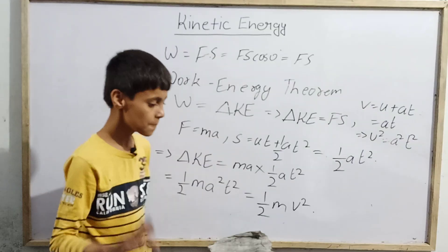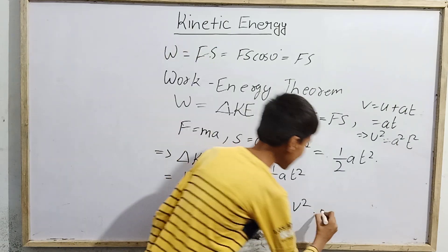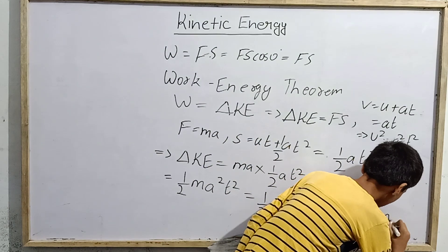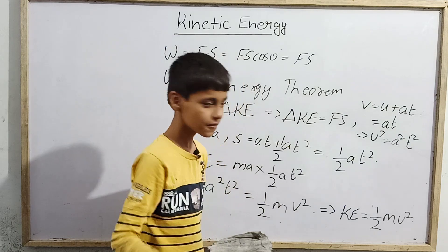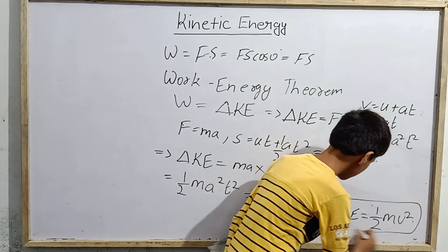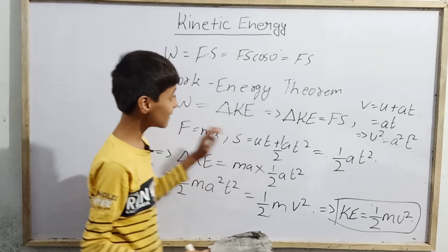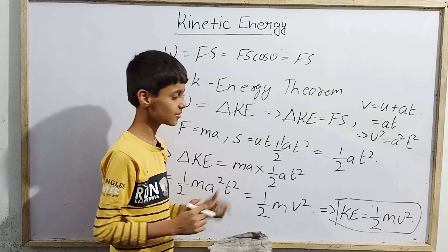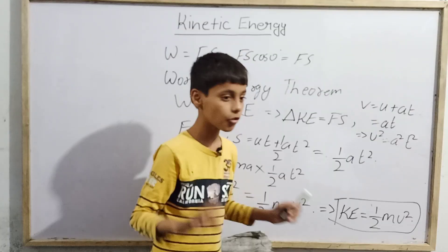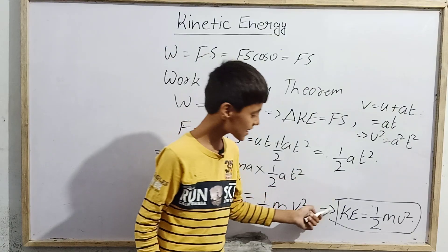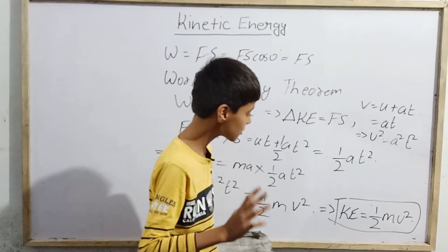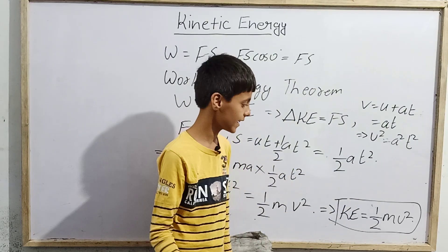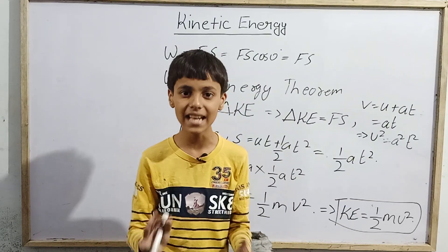So the final equation we derived is: kinetic energy of a particle equals ½mv². Today we learned what kinetic energy is, and we derived the formula for kinetic energy. This equation KE = ½mv² is very useful and can be applied in most cases to find the answer. Thank you.